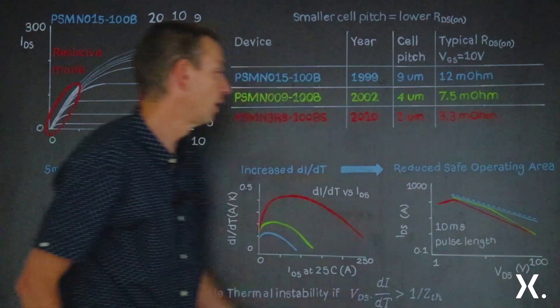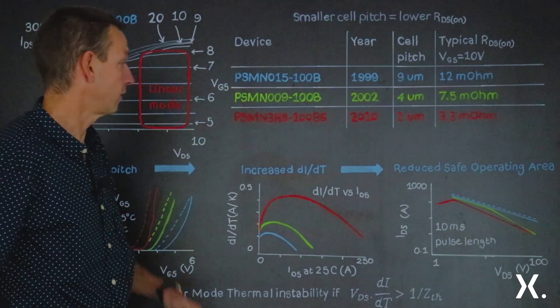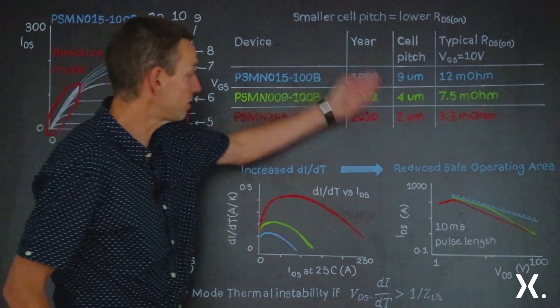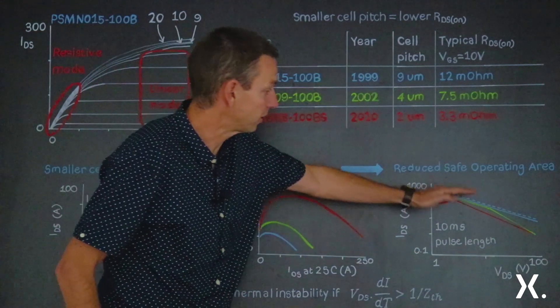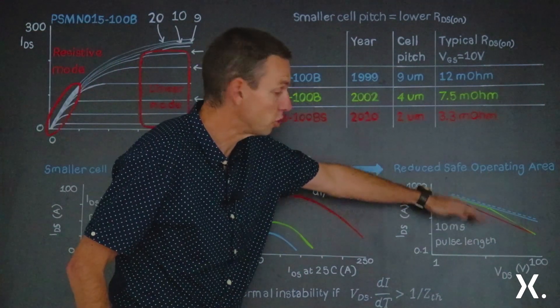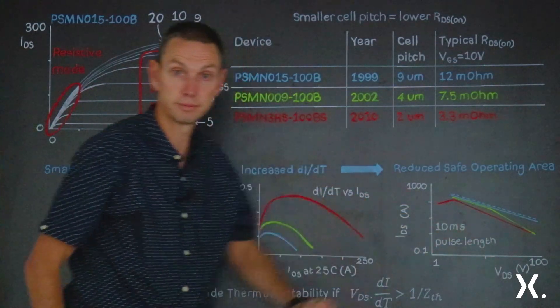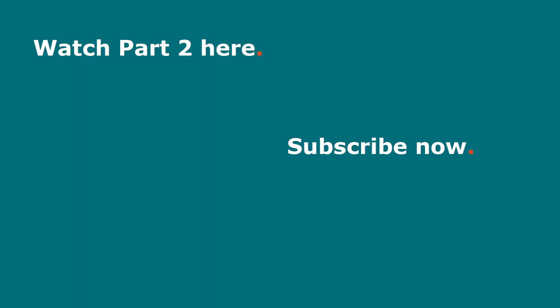To conclude: quite clearly, as the cell pitch decreases, the dI/dT increases, and that has meant we've had to reduce the safe operating area with the smaller cell pitches. Thank you for listening, and if you'd like to know more information, have a look at nexperia.com.